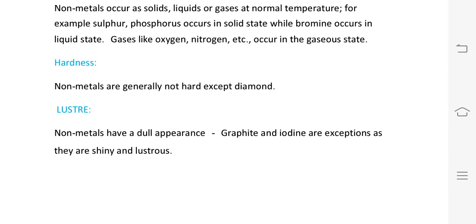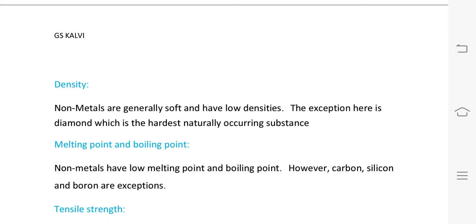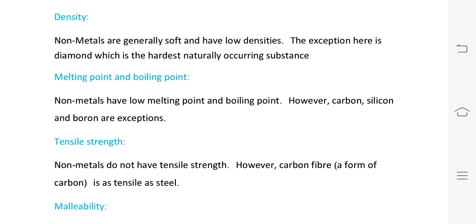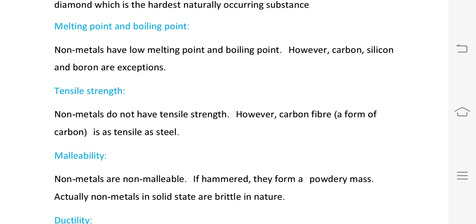Luster: non-metals have a dull appearance, except graphite and iodine which are shiny. Density: non-metals generally have low density; exception is diamond which is hard. Melting and boiling point: non-metals have low melting and boiling points; exceptions are carbon, silicon, and boron. Tensile strength: non-metals generally lack tensile strength, except carbon fiber.